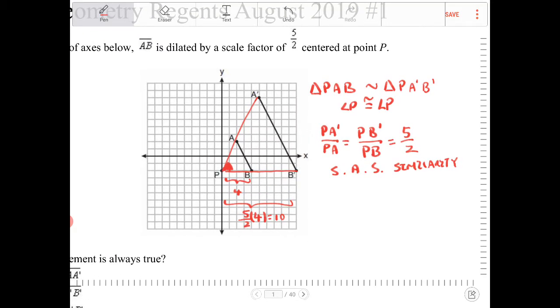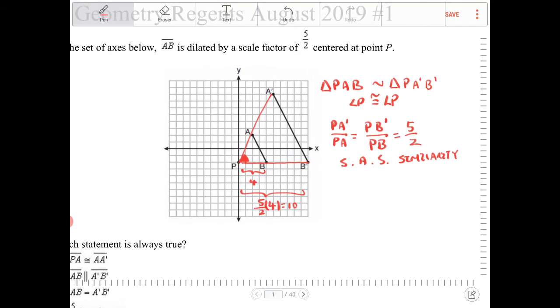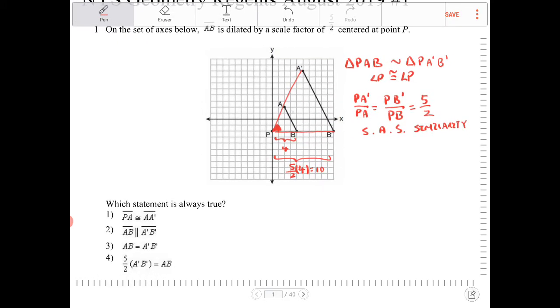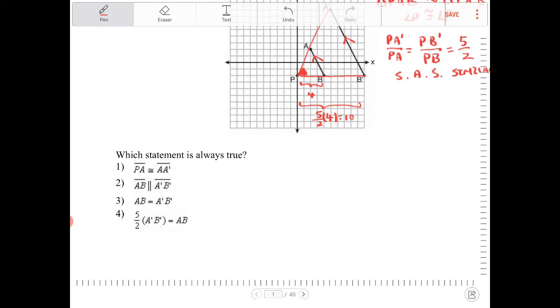Because we have this side-angle-side similarity, then what has to happen all the time is these two sides, AB and A'B' must therefore be parallel. Let's see here if there's an answer choice like that. And actually there is. That's option two.